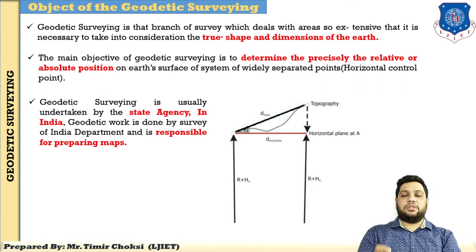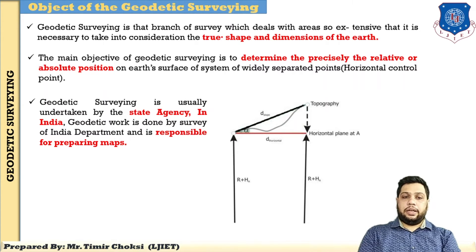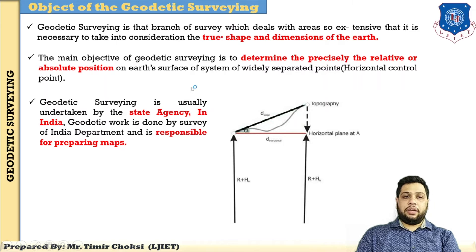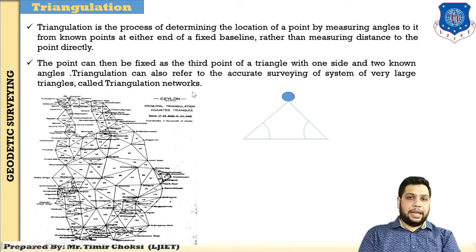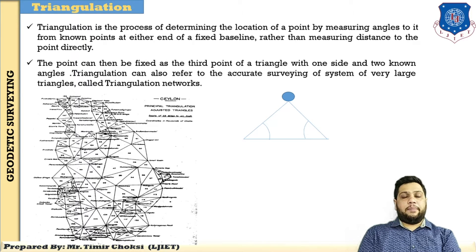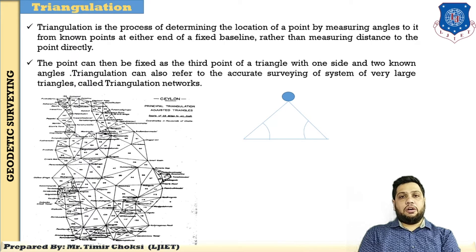The main objective of geodetic survey is to determine precisely the relative or absolute position on the earth's surface of a system of widely separated horizontal control points. Geodetic survey is usually undertaken by a state agency in India. After understanding geodetic survey and its objective, the next important concept is triangulation. In plane survey, to find the location of any point, you conduct a traverse. But in geodetic survey, you conduct the triangulation process.